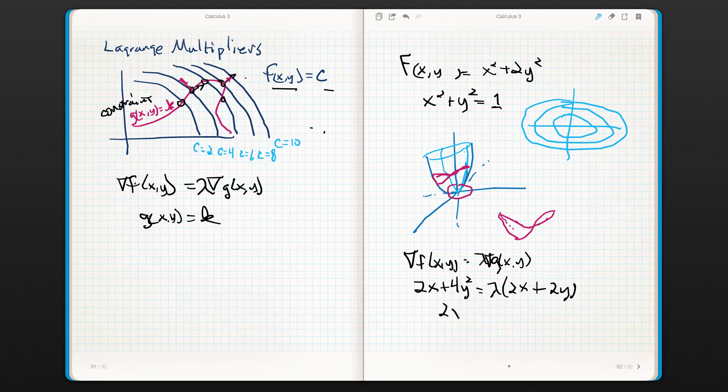Now we know that I can take the separate components and set them equal to each other. So really what I get is 2x is equal to lambda 2x and I can do 4y is equal to lambda 2y. Now the thing to remember, and this is super key because I'm about to pop over to the other side, is that I'm still subject to the constraint x squared plus y squared is equal to 1. So all three of these things are at play.